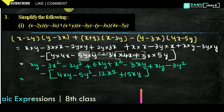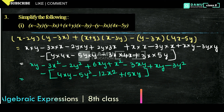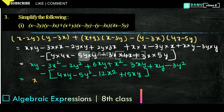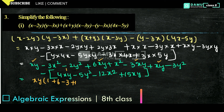So our next step is to take all the terms at a time. So xy is there, here minus 3xy is there, then xy plus 6xy minus 3xy then xy. So let's take common of xy: here 1 will come, here 6 will come, then minus 3, then plus 1, plus 1. Then minus of 4xy — we have to multiply minus of 4xy, so it will become minus 4.